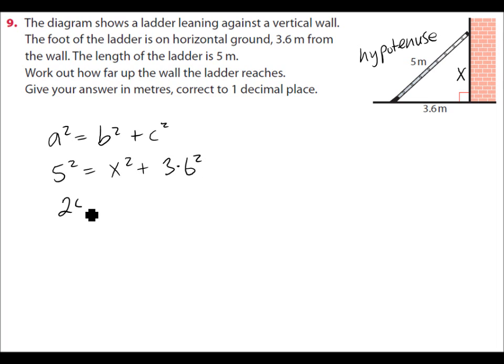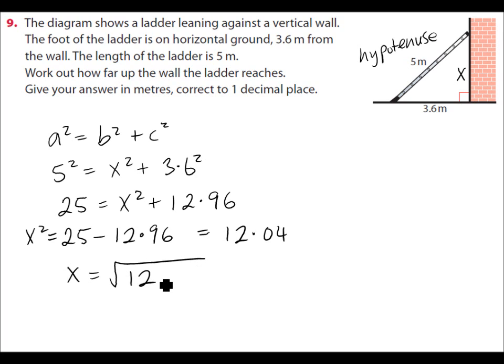So 25 is equal to x squared and 3.6 squared is 12.96. So 25 take away 12.96 is equal to x squared. And that's equal to 12.04. So x is the square root of 12.04.